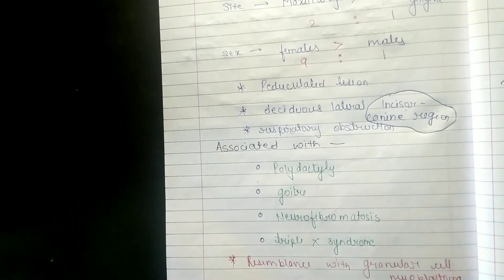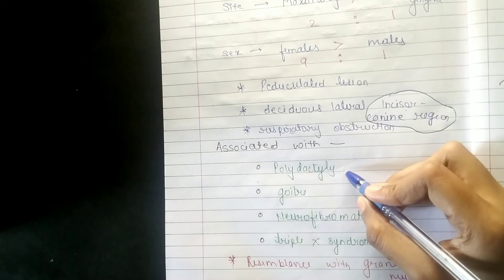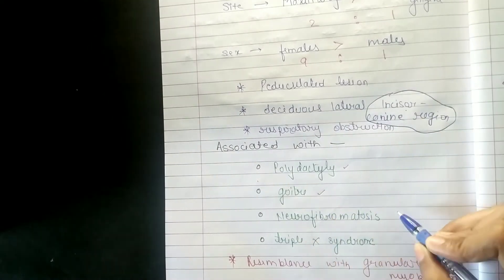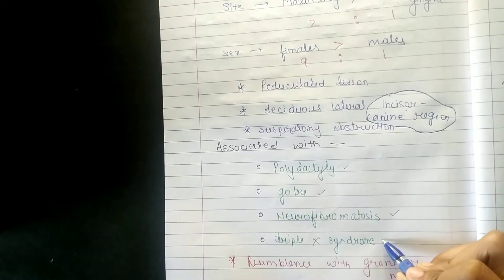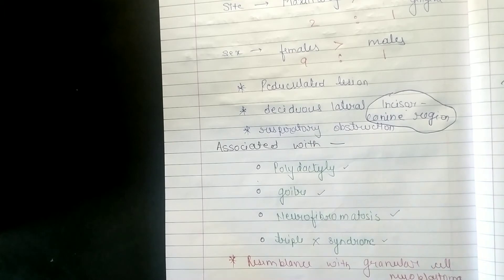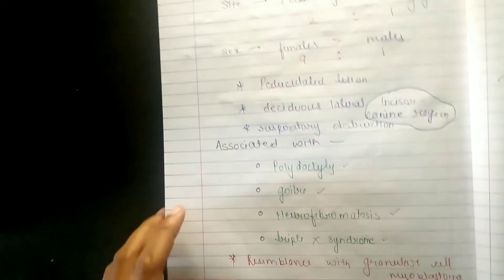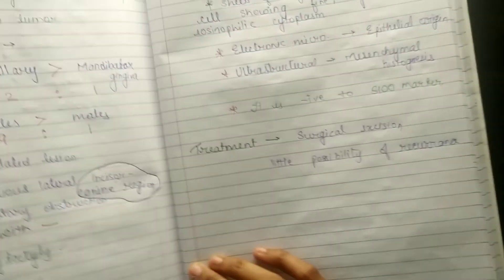Respiratory obstruction can occur. It is associated with polydactyly, goiter, neurofibromatosis, and syndrome. And it can also show resemblance with granular cell myoblastoma.